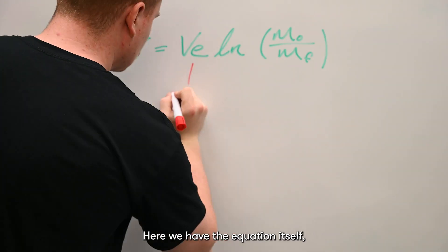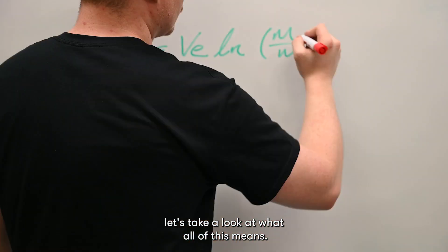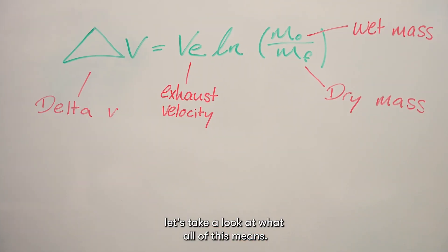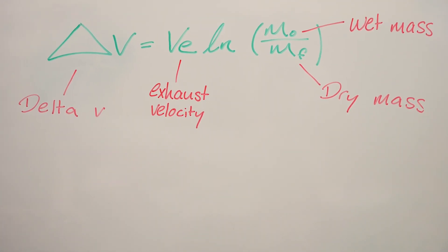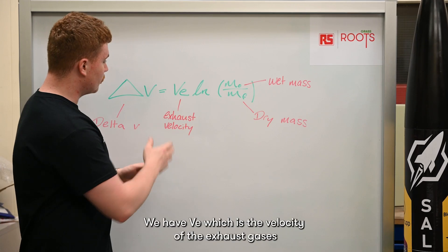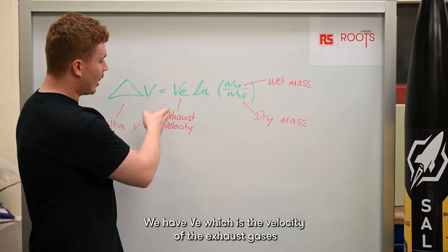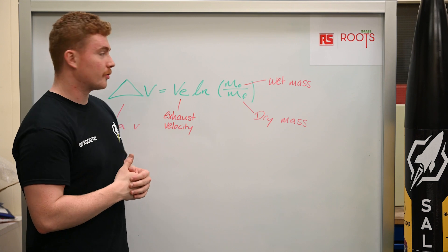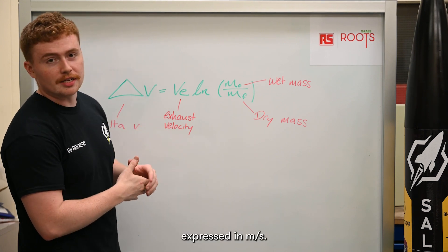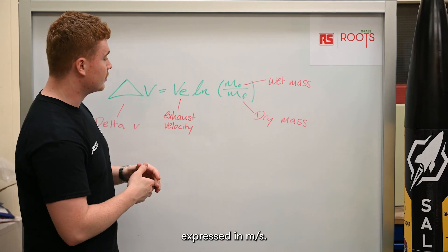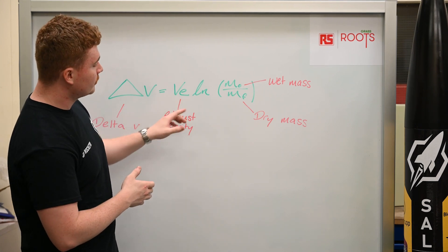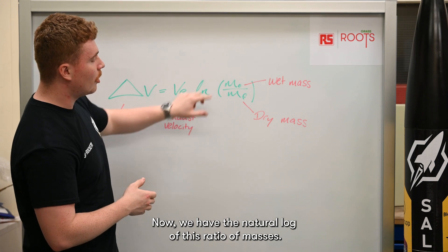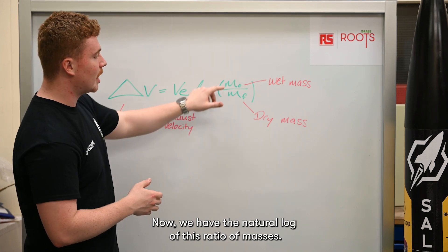Here we have the equation itself — let's take a look at what all this means. First we have the velocity of the exhaust gases of the rocket, expressed in meters per second. Moving on, we have the natural log of a ratio of masses.